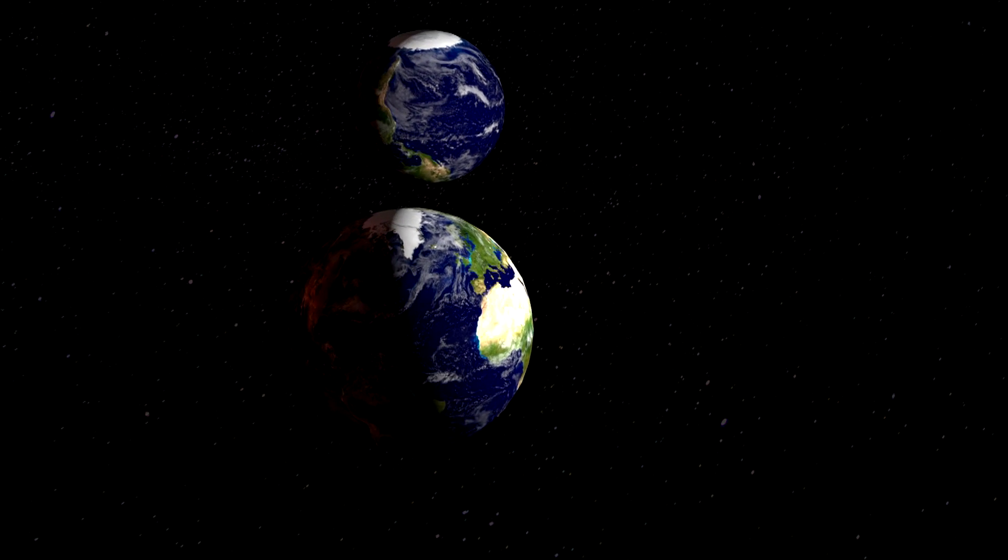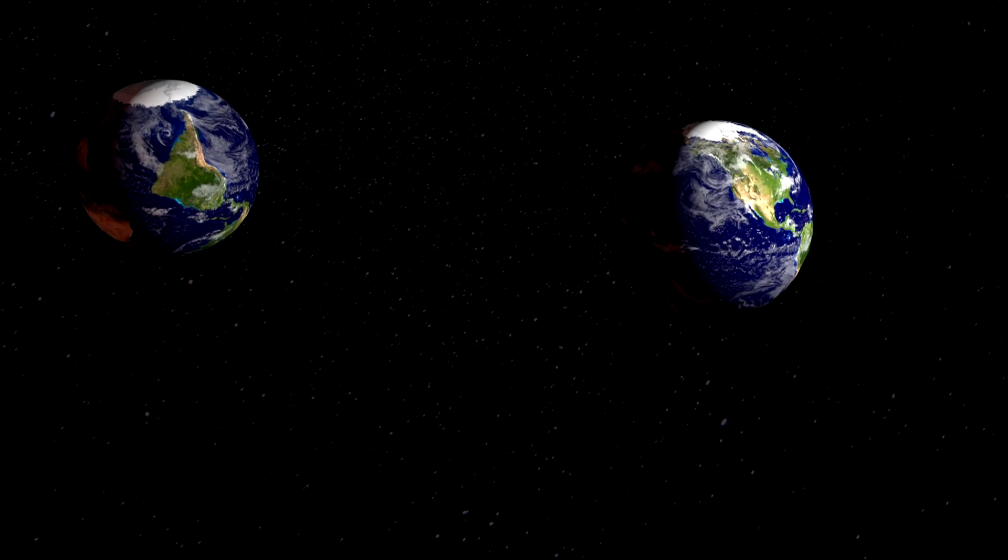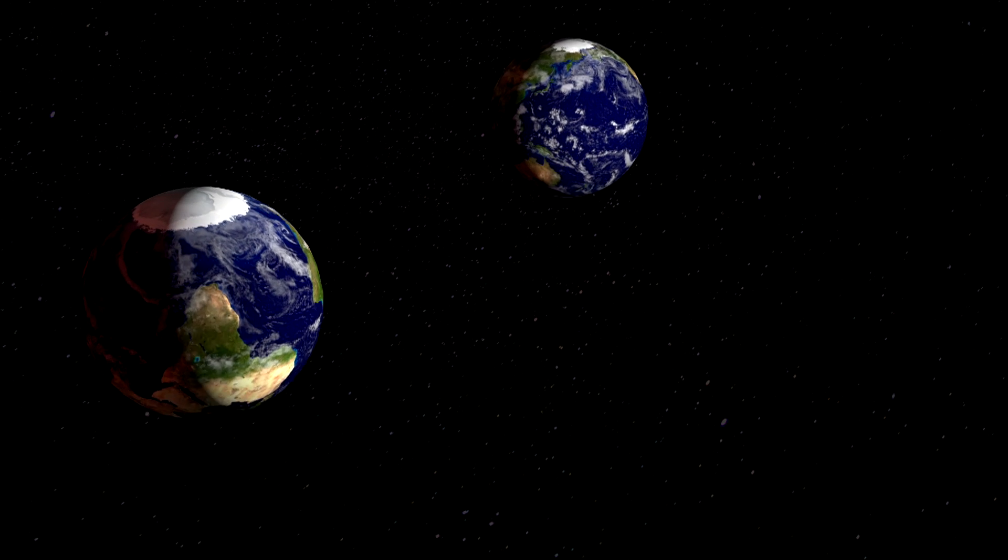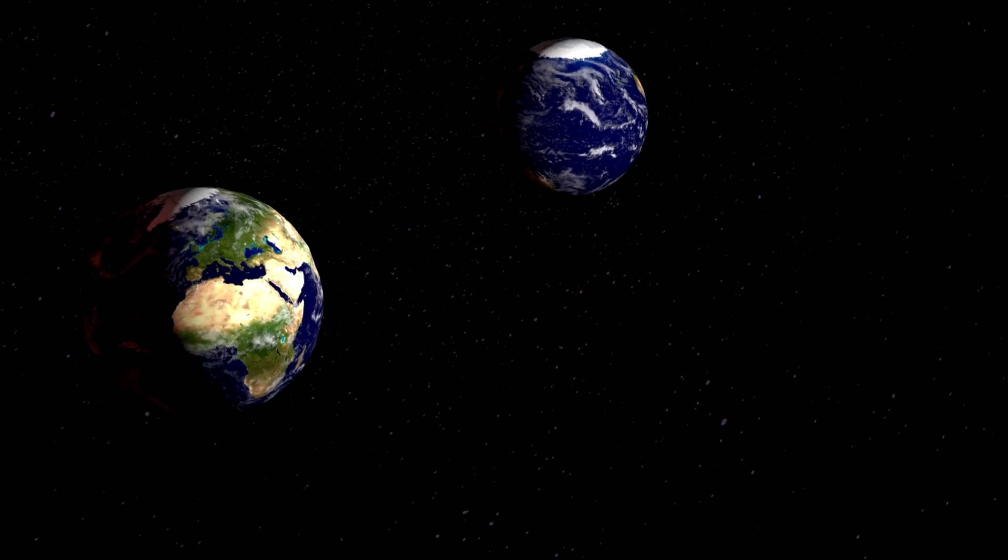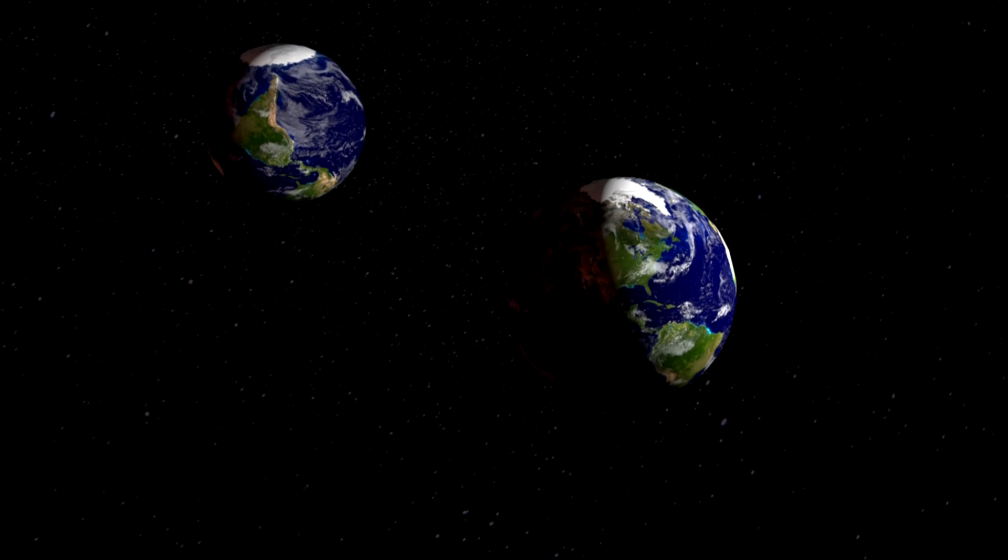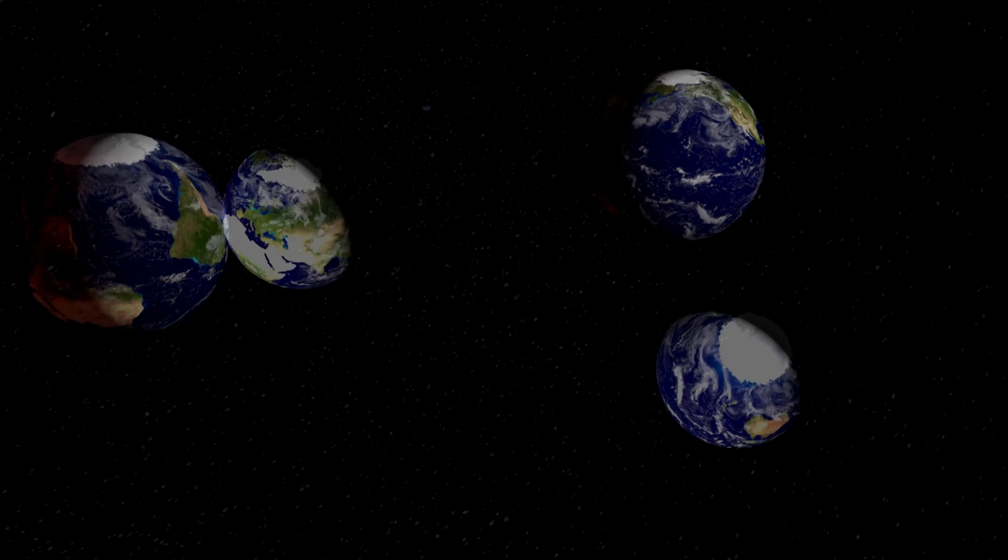But we'll also take a look at a few other examples including Roche worlds, double planets that have literally merged into a dumbbell shape, and as always we'll take some time to discuss how native life might arise on such worlds and what special aspects of terraforming would be needed to make these habitable for humans.